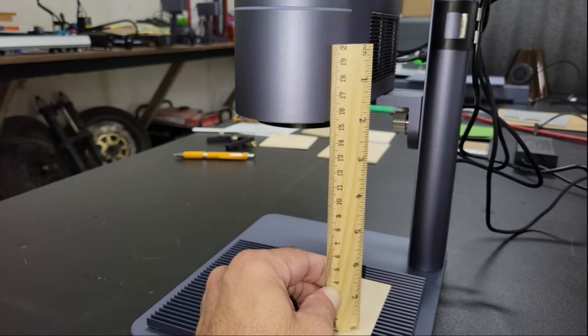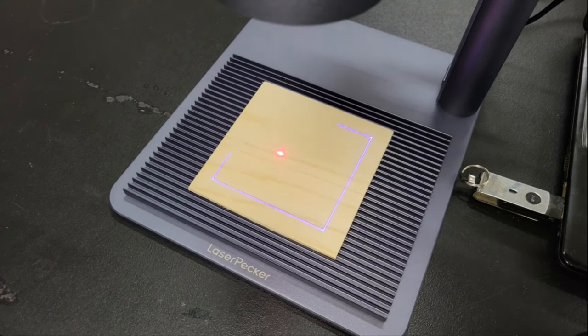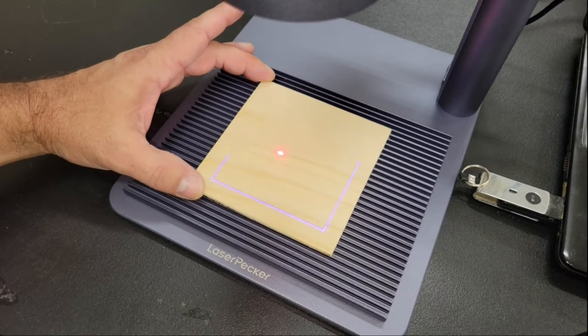The focal point for the LP4 is set like the focal point for the LP3, by using a ruler to set the module at 150 millimeters from the work surface or by combining the two red dots in preview mode.